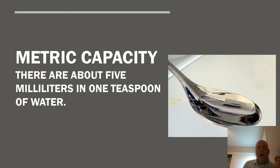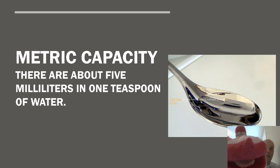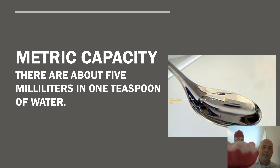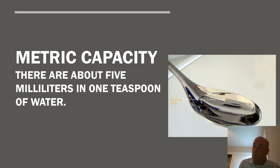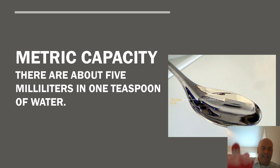Think about how little a milliliter is. There are about five milliliters in just one teaspoon of water. So a milliliter is not very big at all. But if you have 1,000 of them, that's one liter. And 2,000 of them would be two liters — you can see how they build up. Yes, I can see that.